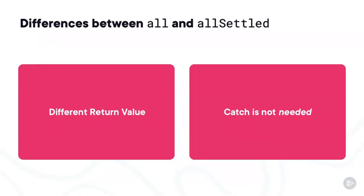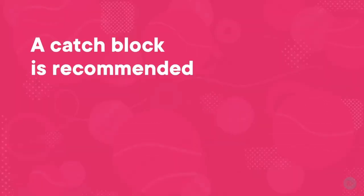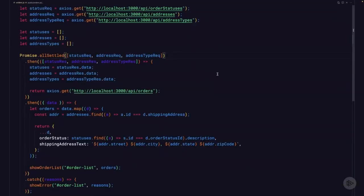The second difference is that we don't need a catch block, because the promise will resolve with an array of data including the rejected promises. Even though a catch block is not specifically needed, it's still good practice to include it — it'll help catch any errors that might occur inside of your then block.